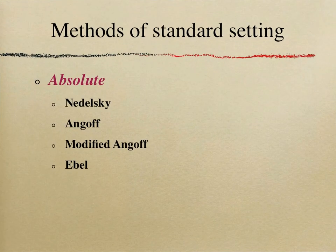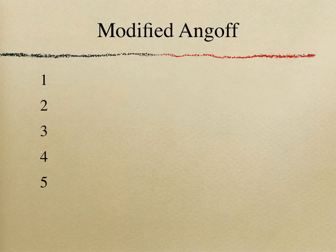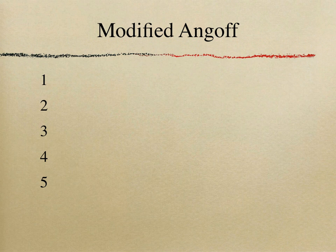For that reason, modifications to the Angoff method were made to improve it. The modified Angoff, which is extremely commonly used — including here at the School of Dentistry — works on the basis of the number of marks a borderline candidate can gain out of the total marks for each item. Instead of asking the likelihood per item, you ask: out of these five MCQ items, how many can a borderline candidate answer correctly? That's a very different approach.